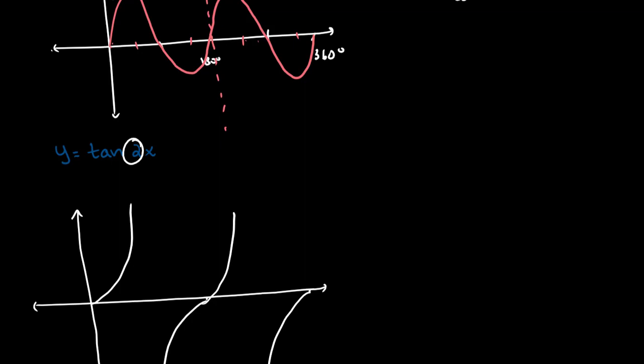So the period for tan is equal to, so the old period is equal to 180 degrees. So over, this is 90, this here is 270 degrees. And the period of tan